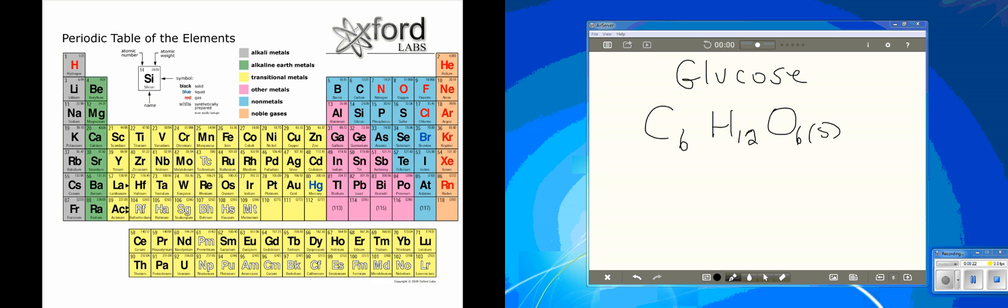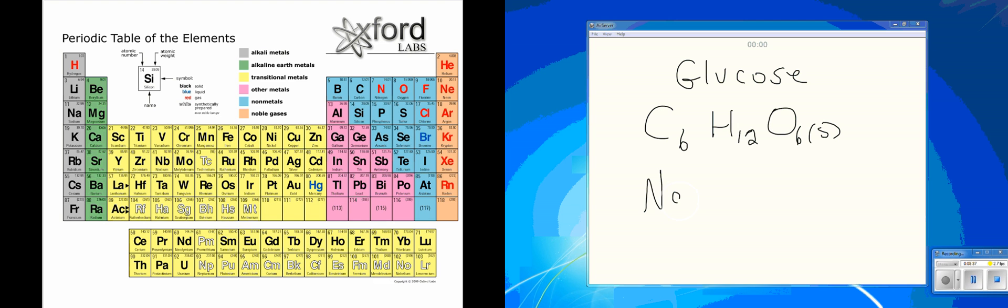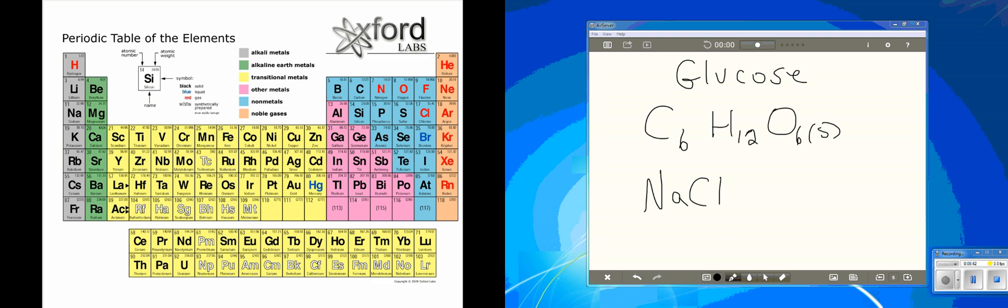Another example is table salt, which is sodium chloride. Sodium is Na, and chloride is Cl, so sodium chloride is NaCl. One important rule when writing compound names: you always write the metal first. In this case, sodium is a metal and chlorine is a non-metal.